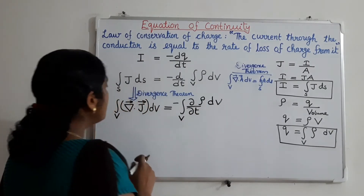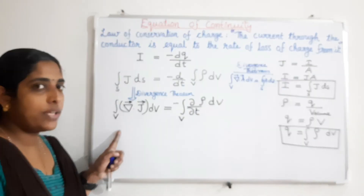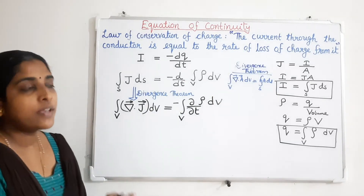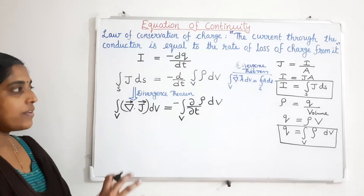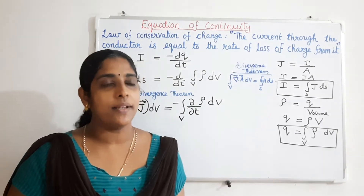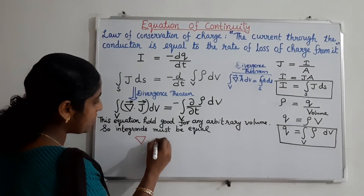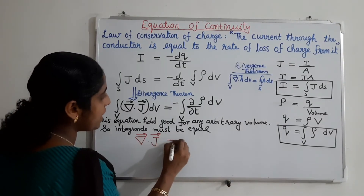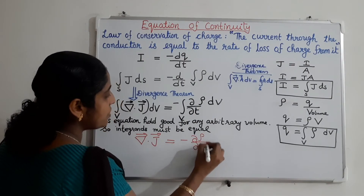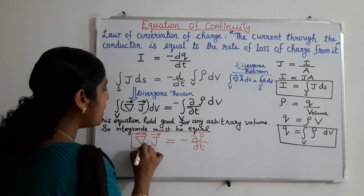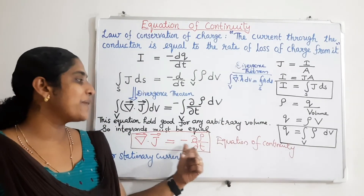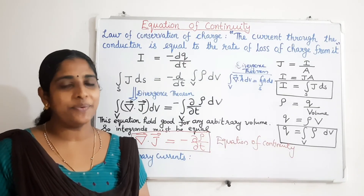This gives us a volume integral on both the left and right hand sides over the same arbitrary volume. Since both sides are volume integrals over the same arbitrary volume, we can equate the integrands. The integrand on the left hand side is del · J, and on the right hand side it is −∂ρ/∂t. Therefore, del · J = −∂ρ/∂t, which is known as the equation of continuity.